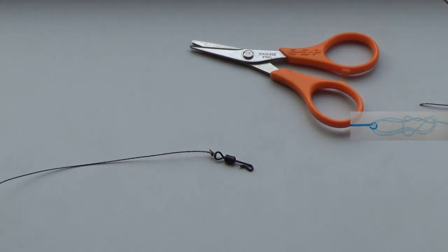One Palomar knot tied to a swivel. It's that easy. It's probably the easiest fishing knot to tie. It's got exceptionally high knot strength and is one of the few knots in fishing that really won't let you down.